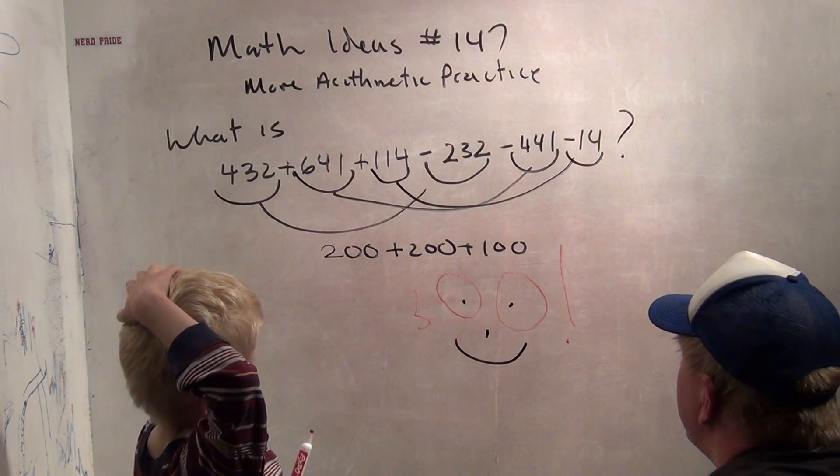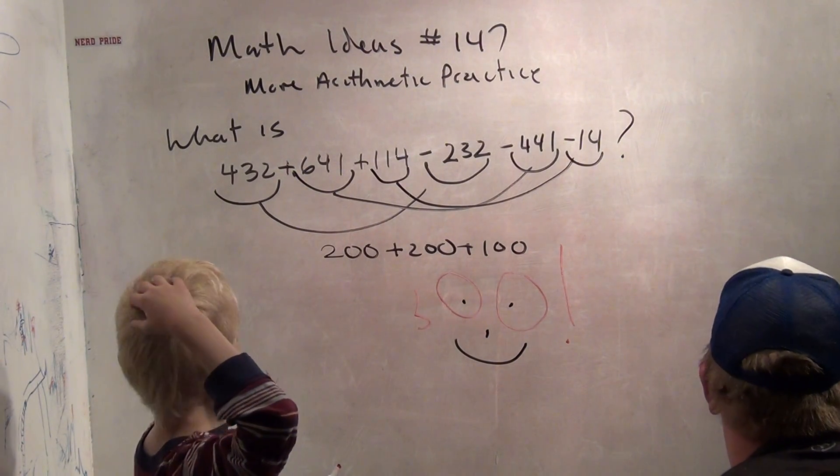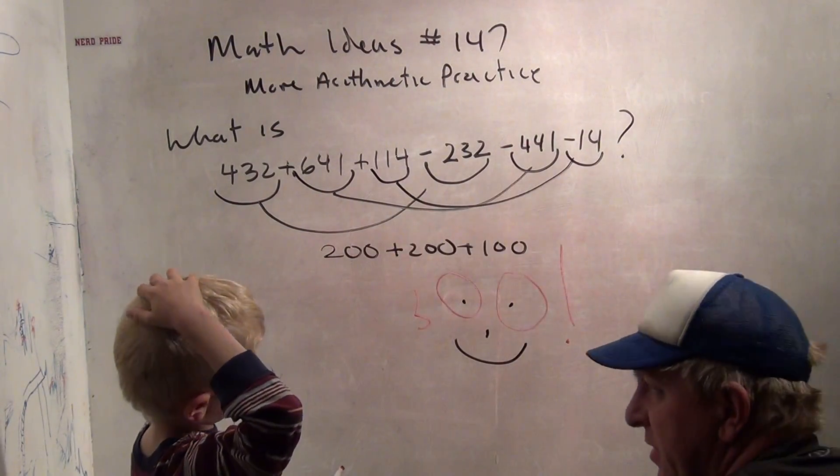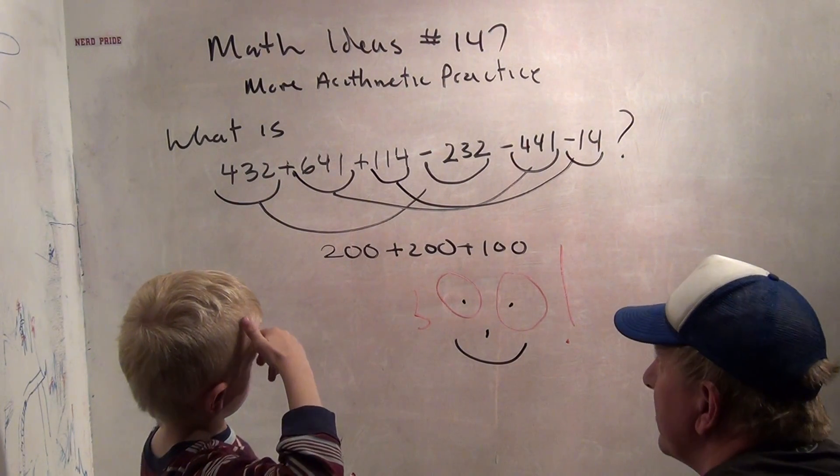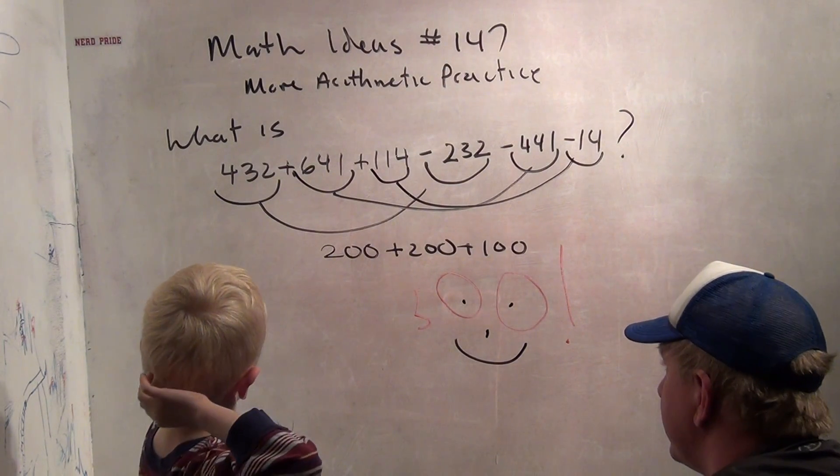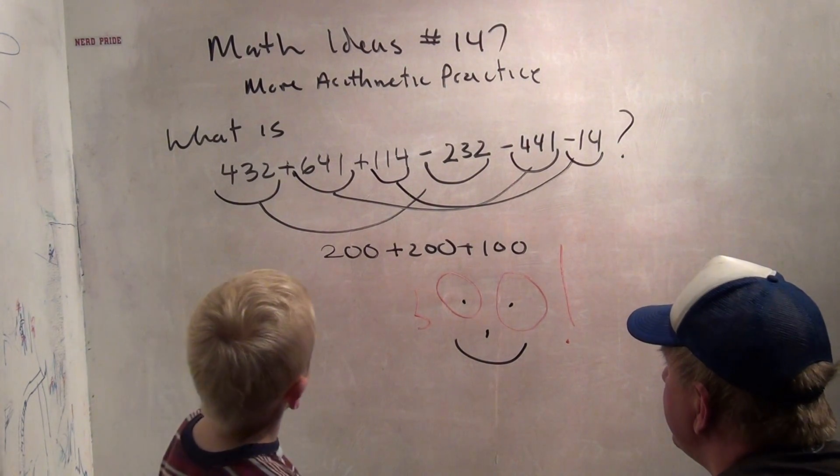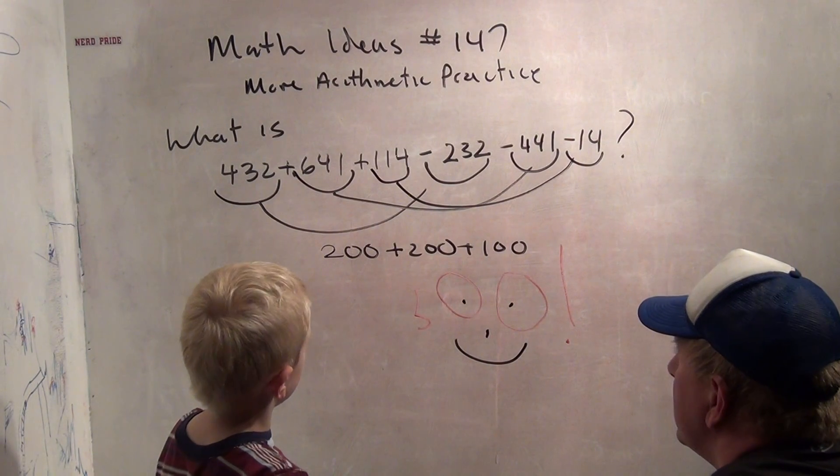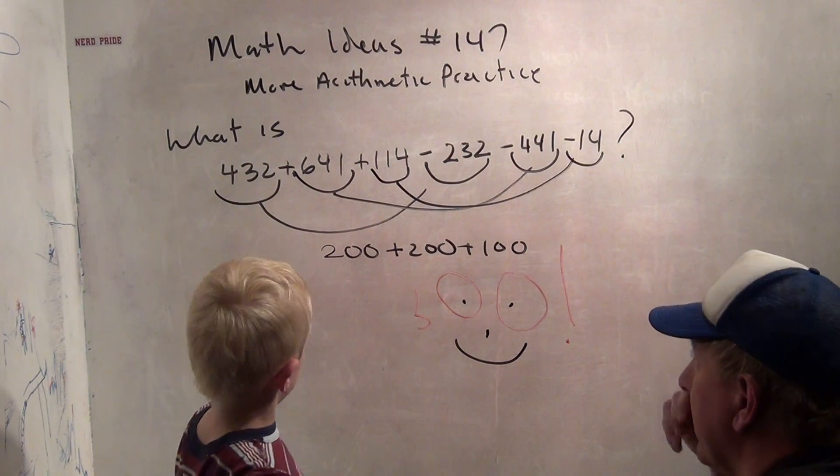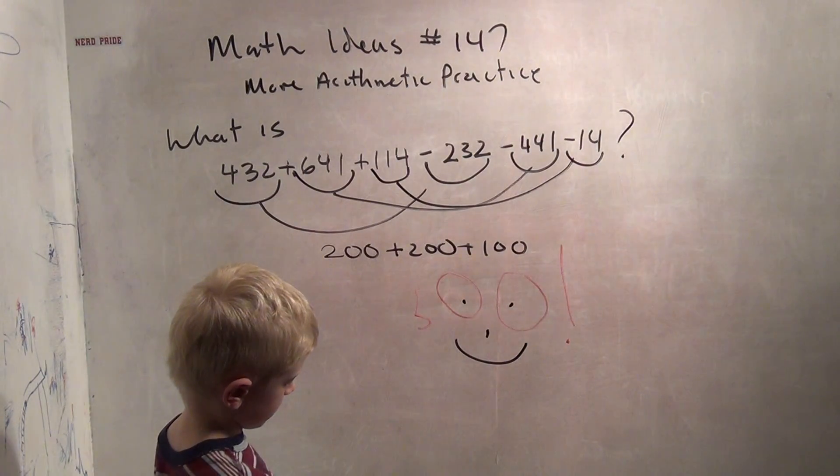Okay, so for a math contest problem, the approach is a little bit different than what we've been working on for just our regular addition and subtraction. Here, we say nobody would ask us to just add up and subtract all these numbers. That's too crazy. Why would anybody ask us to do that? There must be some easier way to do it. And the easier way was to notice what? 432 minus 232 is 200. Yeah. And then 641 minus 441 is 200. Yeah. And 114 minus 14 is just 100. All right, so we found an easier way to do the complicated problem. And that is really, really good. Good job today, honey.